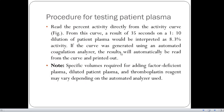Read the percent activity directly from the activity curve. From this curve, a result of 35 seconds on 1 is to 10 dilution of patient plasma would be interpreted as 8.3% activity.